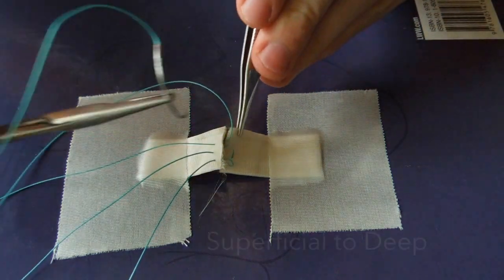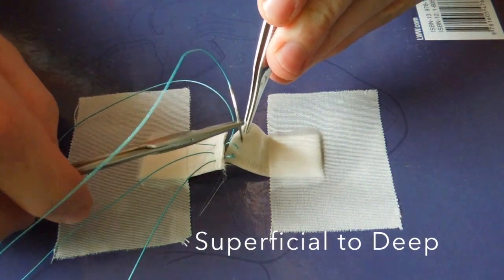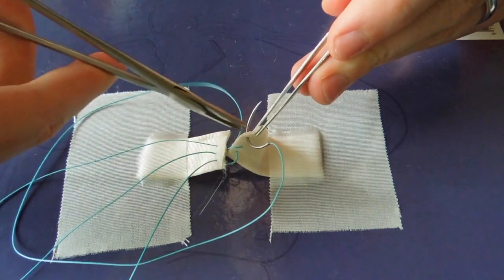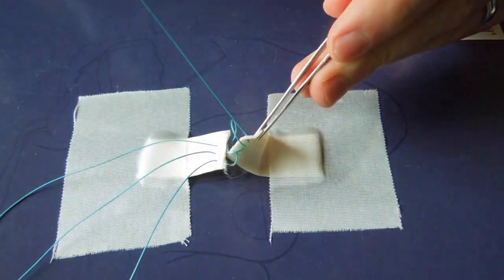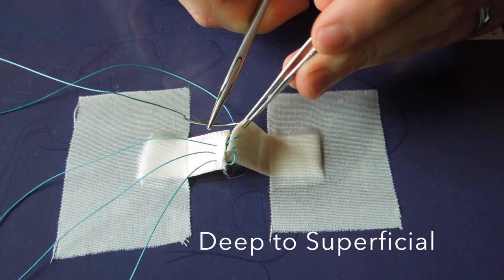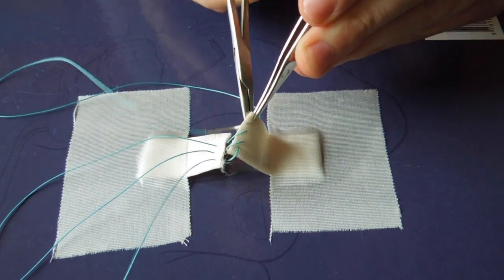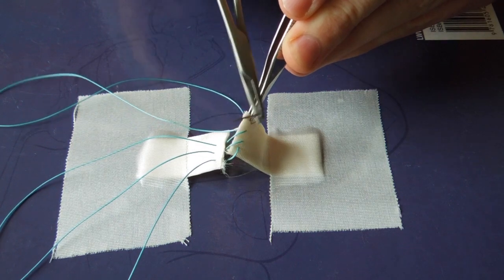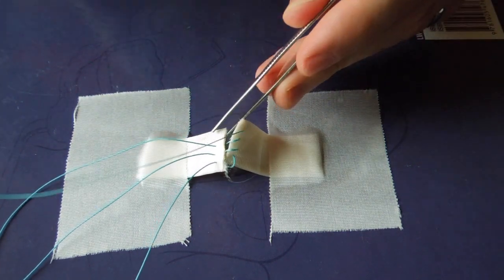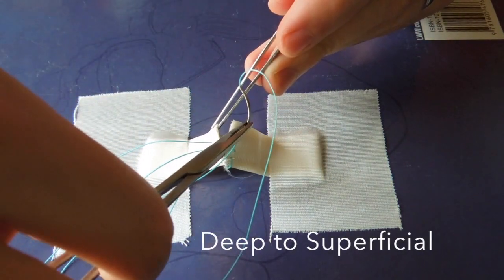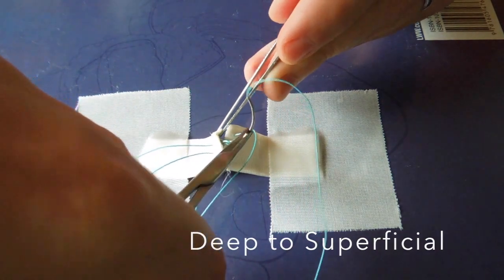Now if we're doing this repair for something like a plantar plate or an ATFL, when we throw these, if we tie the first throw, that will give us poor visualization for the second throws. So what we would do is we would throw each individual suture and then wait until the end so we can throw each stitch and then we would tie them all at the same time.